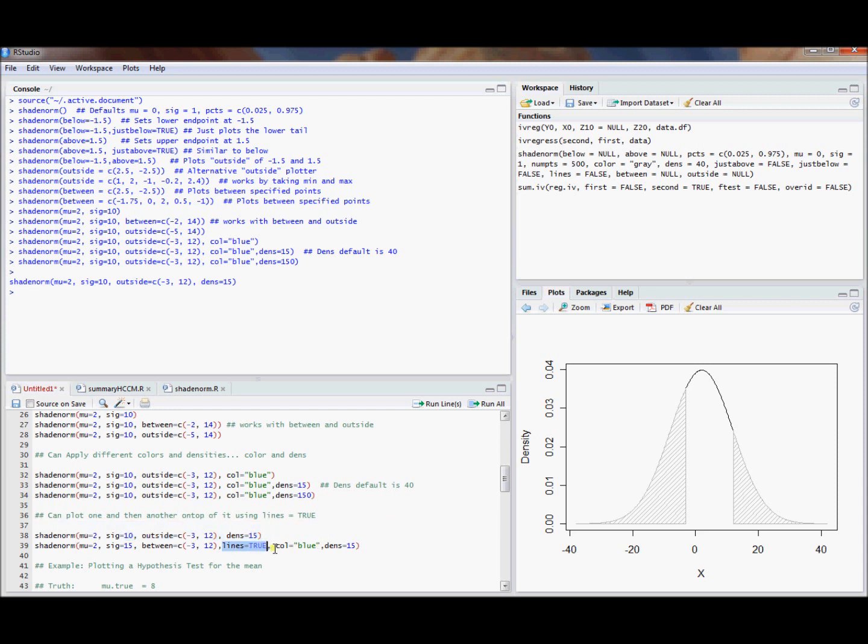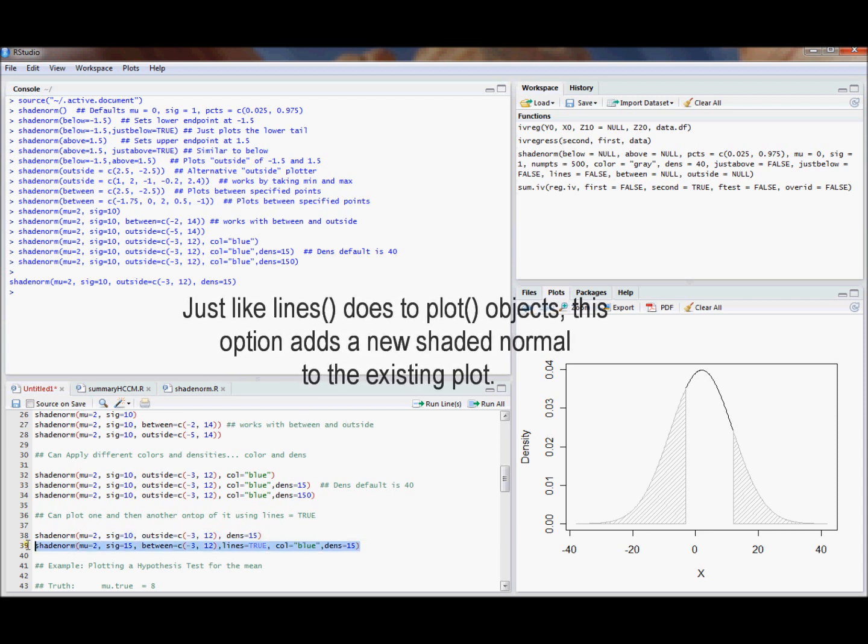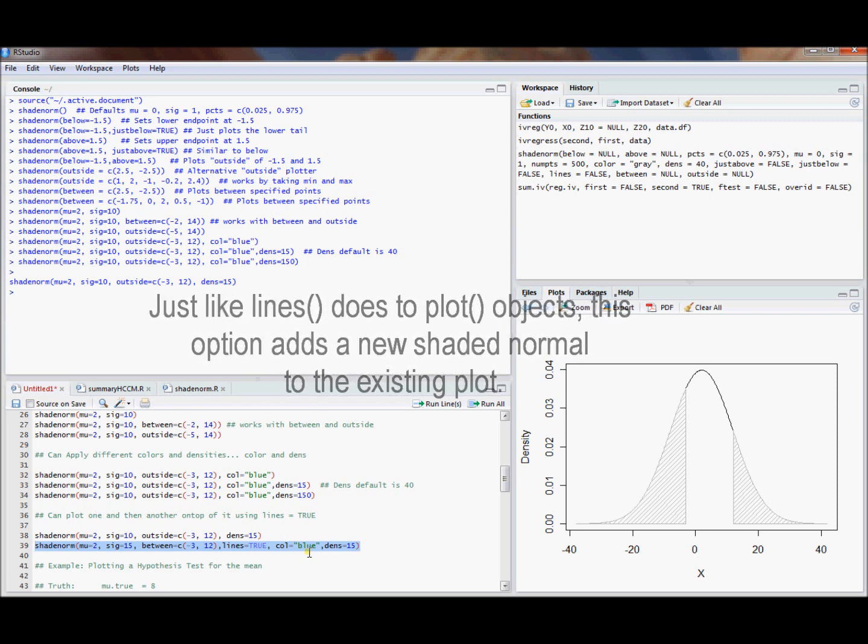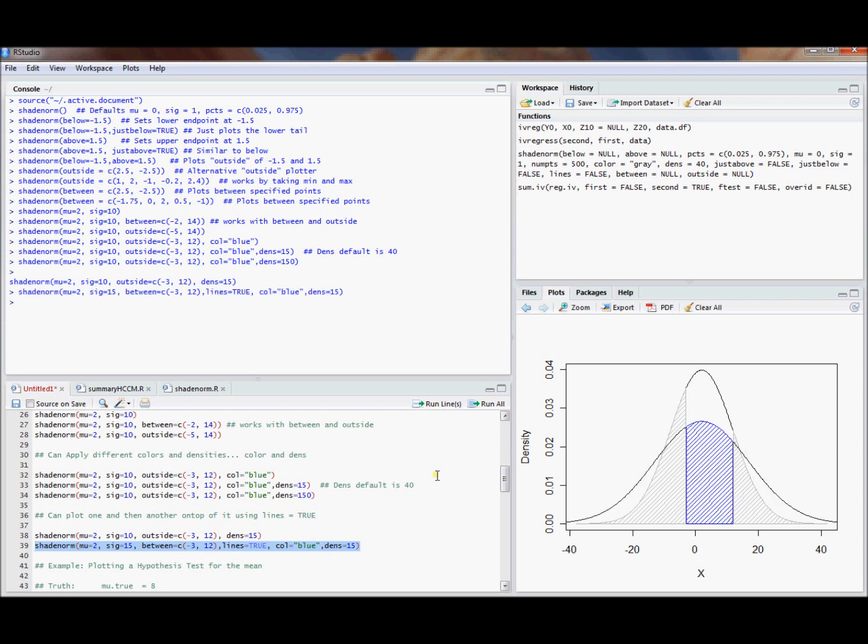if you set lines equal to true inside the shade norm command, the function is going to recognize that you want to plot this as a line and just keep continuing modifying this plot. We'll plot our new density over the top of the old one and we'll also shade over the top and so we get a plot with everything on it. In practice this might be useful for illustrating power or illustrating type 1 and type 2 error in a hypothesis testing setting.